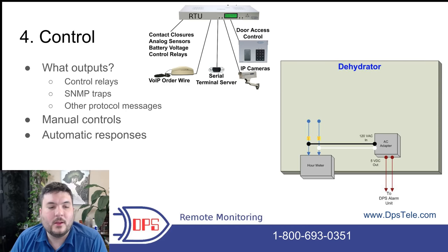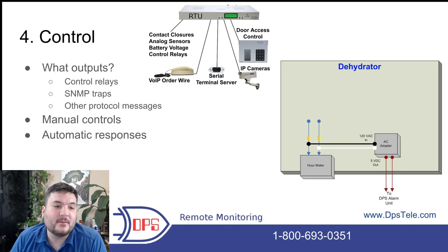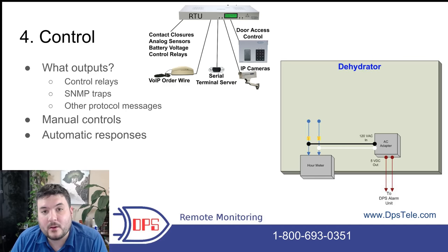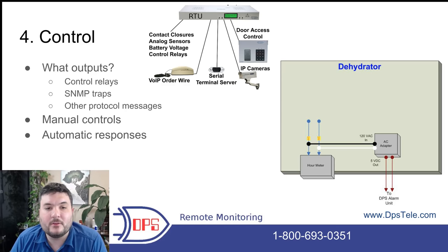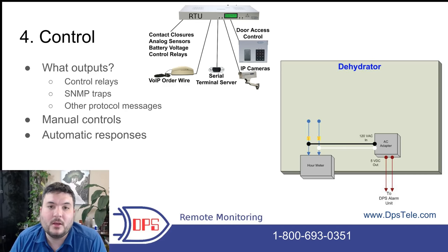The last part of SCADA is control. Key questions: what outputs do you have? Looking at the RTU diagram, you can see control relays on the left side — you can latch contact closures, and equipment with discrete inputs can pick that up to fire up a generator or turn on HVAC units. A good rule of thumb: if it has a button or a switch, you can wire it into a control relay and simulate that flip or button press. You can also send SNMP traps to devices that accept them, telling a server to shut down or executing various actions. If you have DNP3 or Modbus, you can send a protocol message as long as your RTU is compatible.